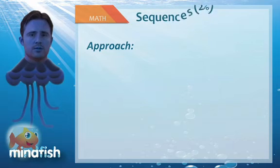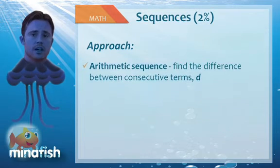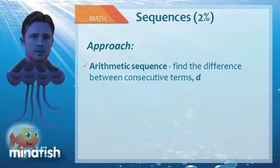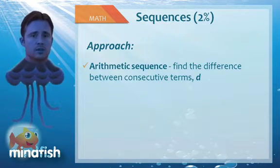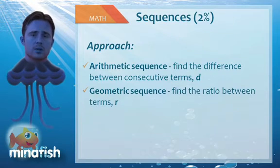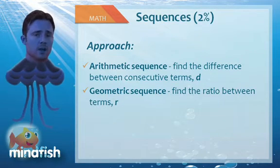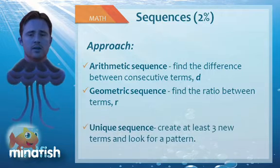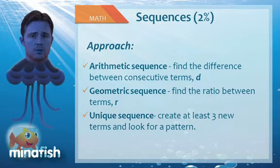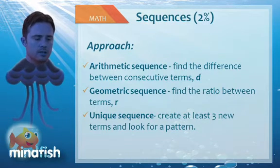So if you see an arithmetic sequence, focus on the difference between the terms. So if it was 2, 4, 6, your difference would be 2. If it's a geometric sequence, focus on the ratio between the terms. So if it was 2, 4, 8, the ratio would be 2. And if it's a unique sequence, make sure that you add some terms so you can determine the pattern of the sequence.